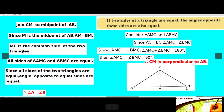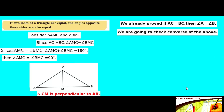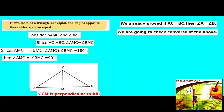So CM is perpendicular to AB. We first prove: if AC is equal to BC, then base angles are equal. We take angle A is equal to angle B.